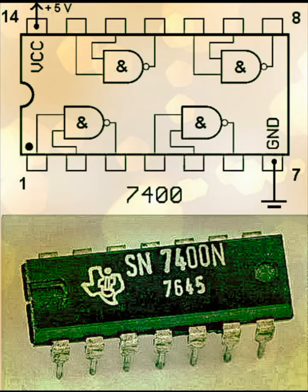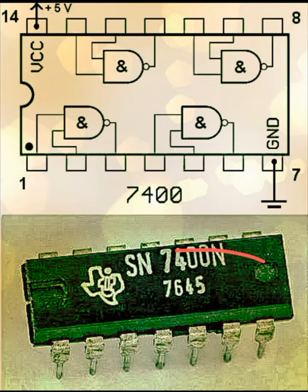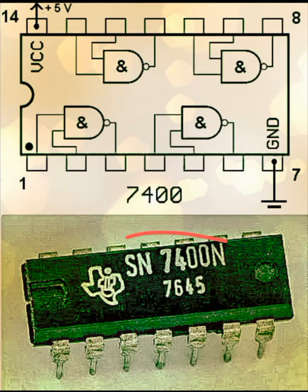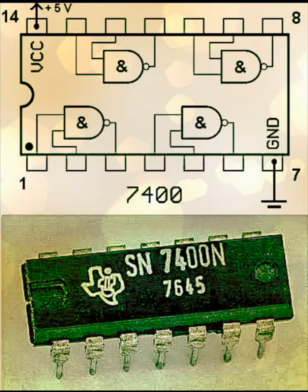In particular, 00 tells us it is a NAND gate IC. In total, there are 14 pins for this IC. As you can see, this is a NAND gate in which there are four such units, so it is called a two-input quad NAND logic gate IC.